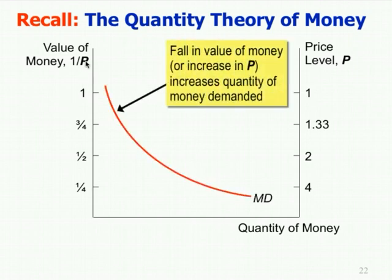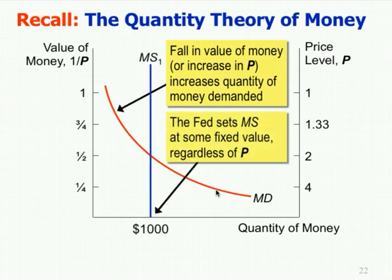A fall in the value of money increases the quantity of money demanded — if it takes two dollars to buy a dozen donuts versus four or six dollars, the higher the prices and therefore the lower the value of money, the more money I need to keep to consume what I want. Meanwhile, the money supply is set by the Fed at some fixed value, regardless of the price level. The price level then adjusts in the long run to equalize money supply and money demand, determining the equilibrium value of money.